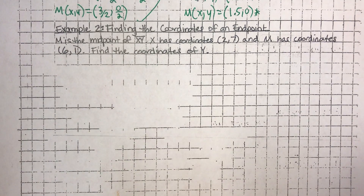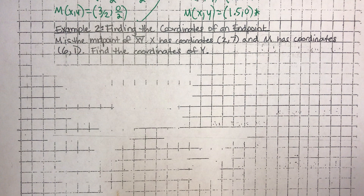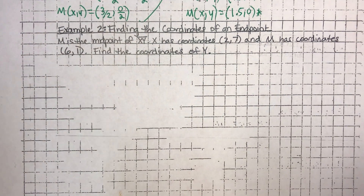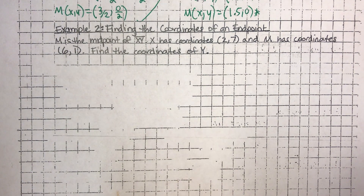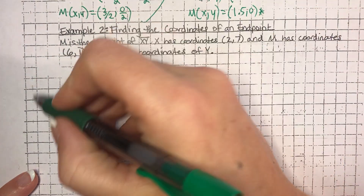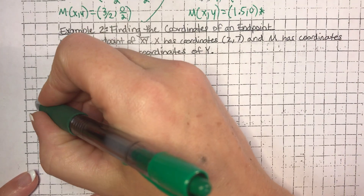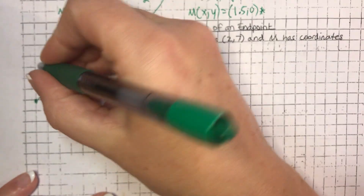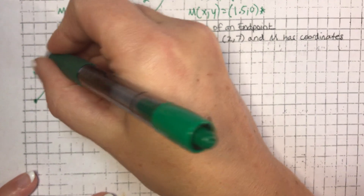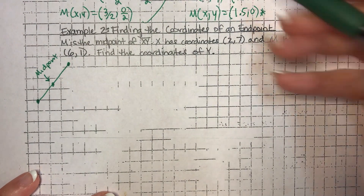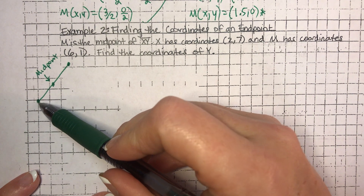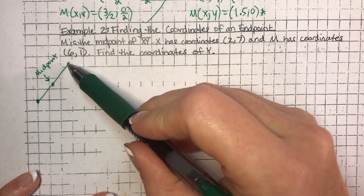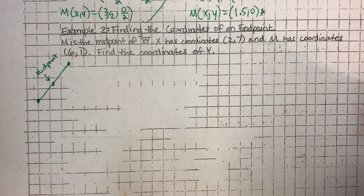Welcome back. We are going to get started with Example 2. For Example 2, we're going to be finding the coordinates of an endpoint. In Example 1, we found the coordinates of a midpoint - we were given two endpoints and had to determine what the midpoint was. But now, we are going to determine one of the values of the endpoint. They're probably going to give us an endpoint and a midpoint, and then we have to figure out what that other endpoint is.